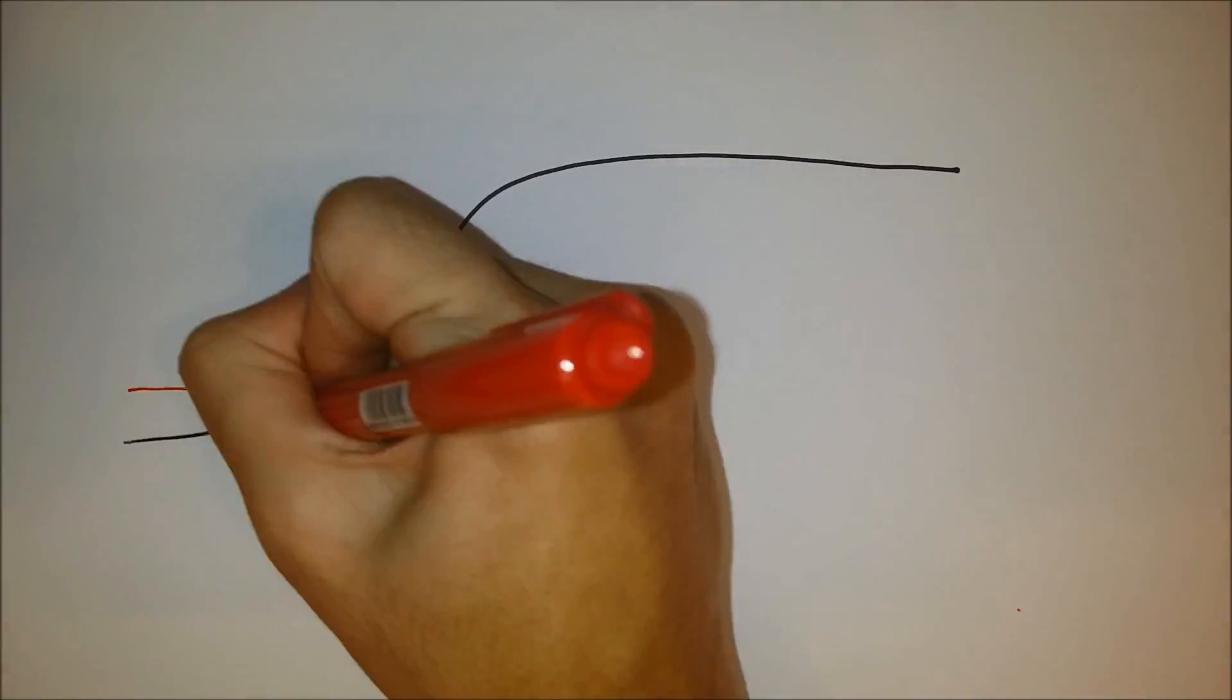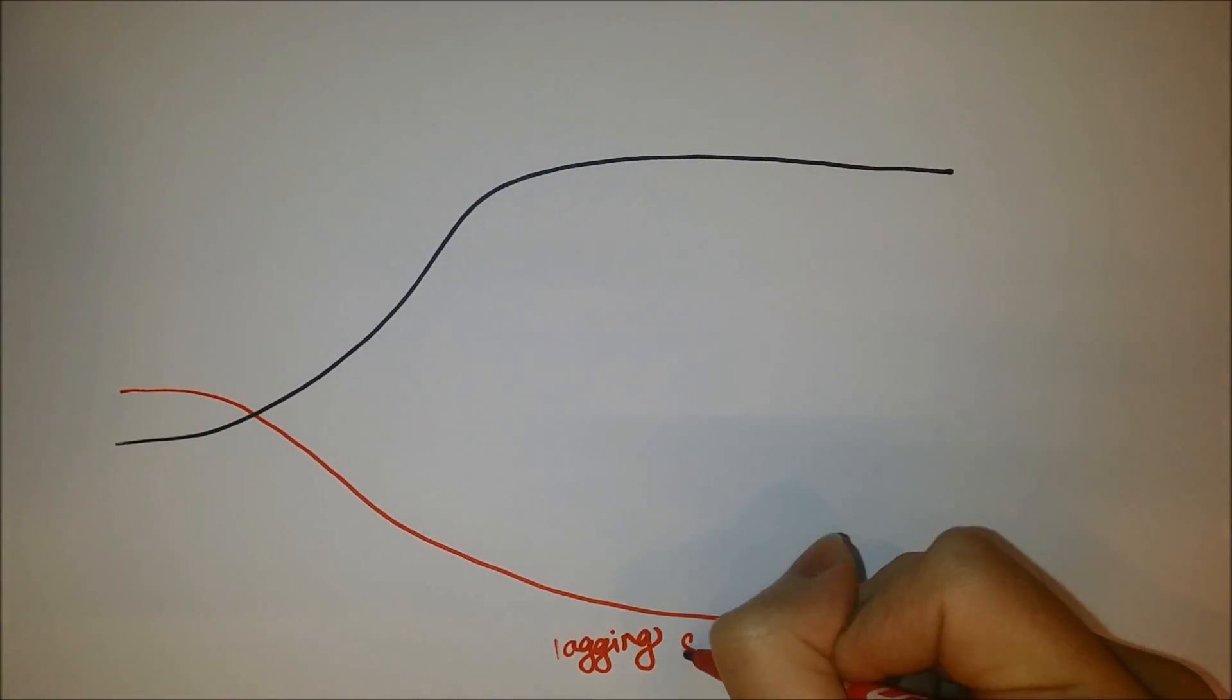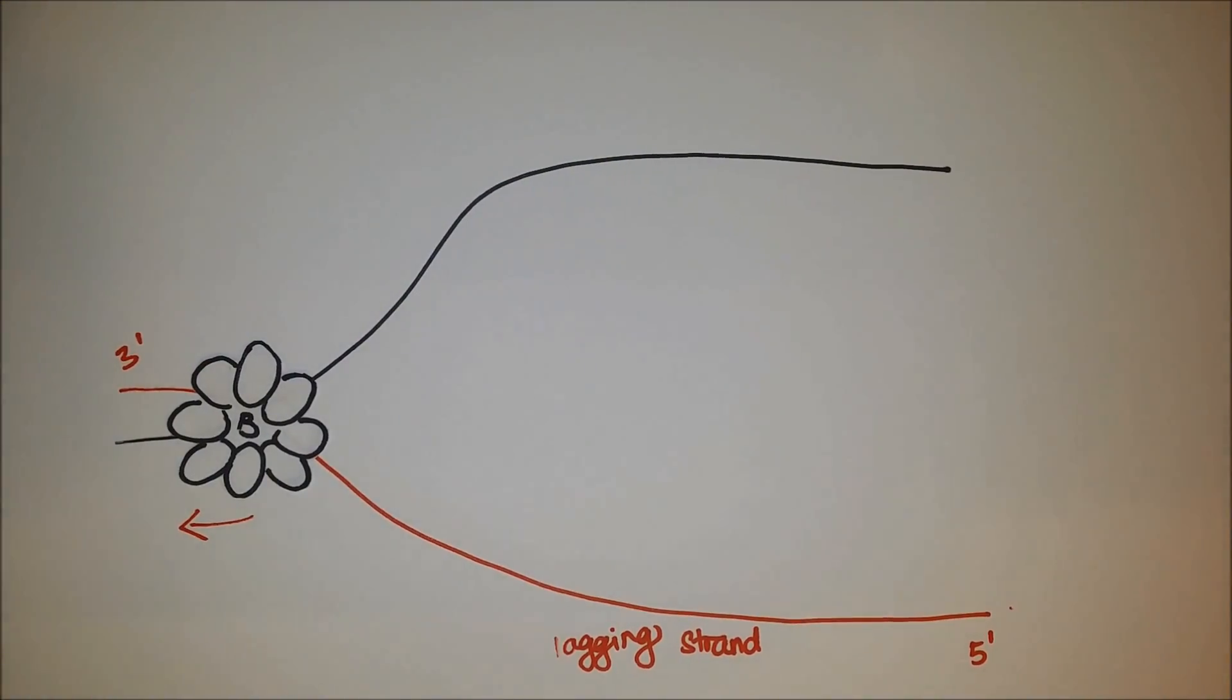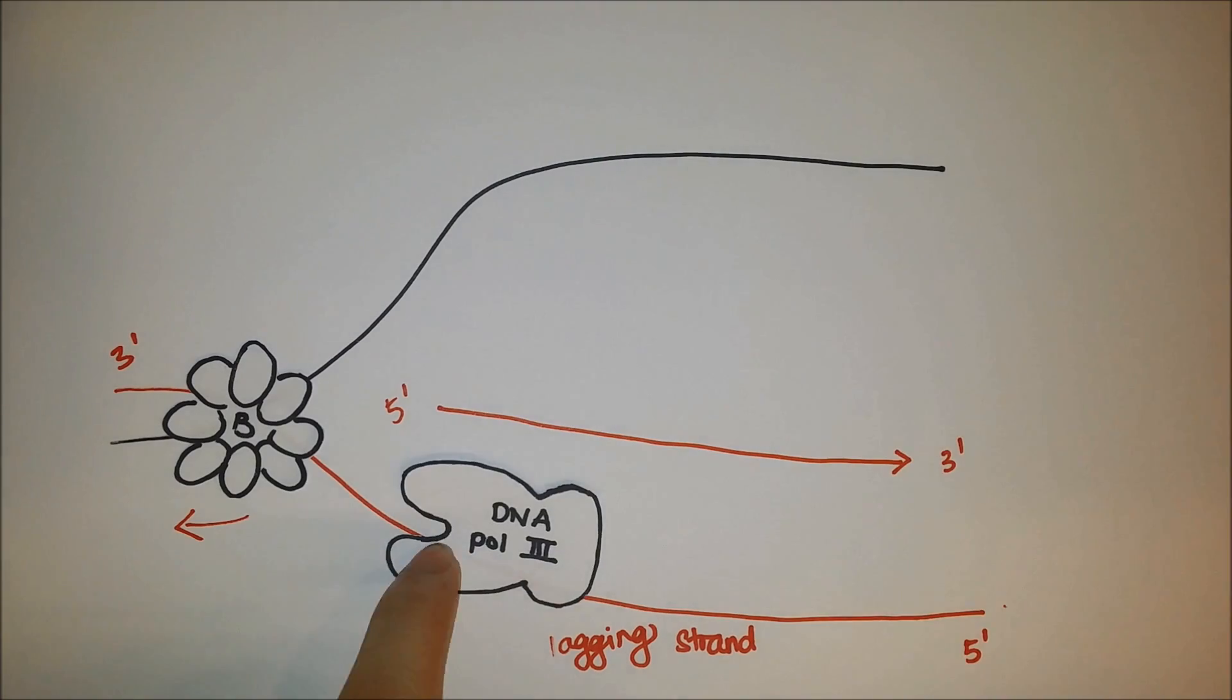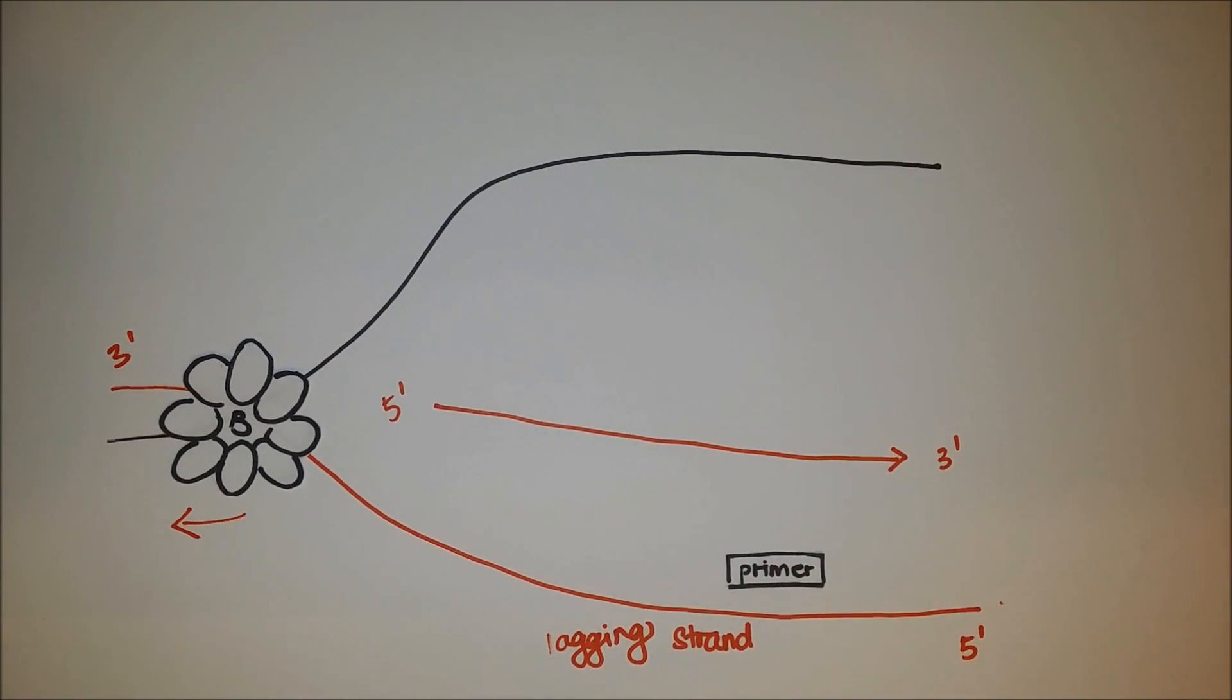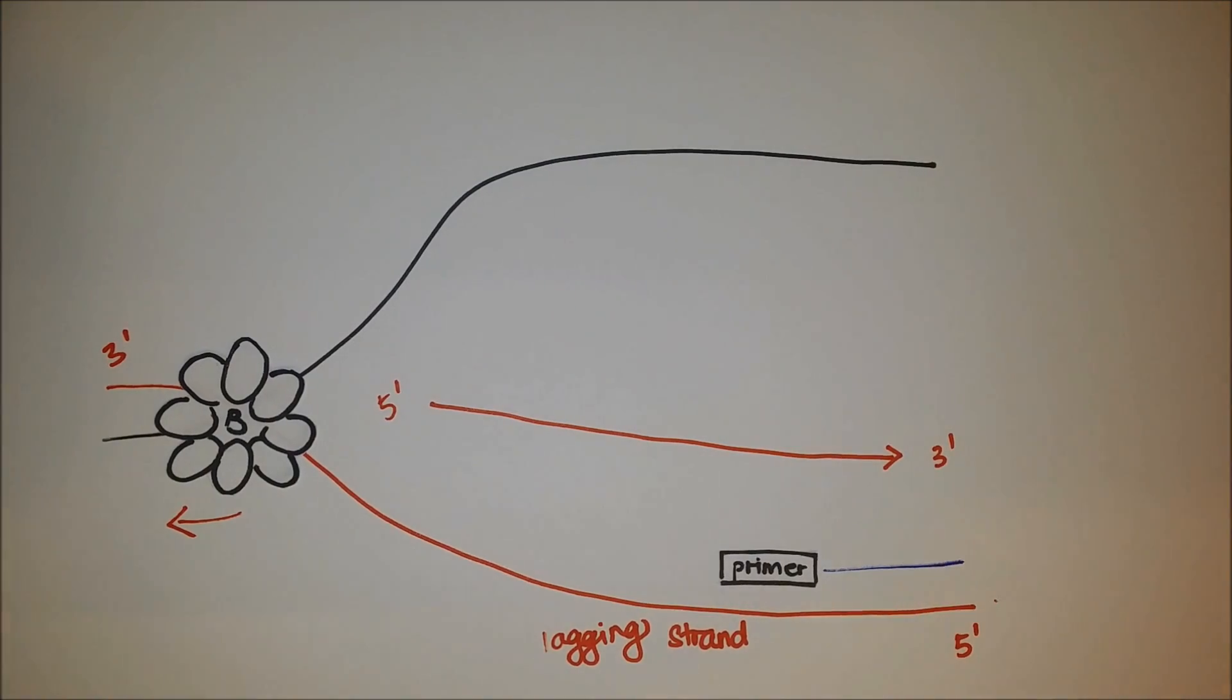The lagging strand synthesis is more complicated than the leading strand synthesis. DNA Polymerase 3 synthesizes the DNA, but only in 5' to 3' direction. The primase, which is a component of a primosome, synthesizes RNA primers periodically.